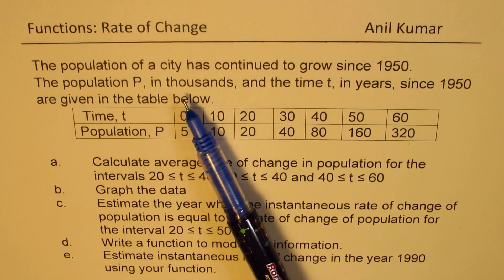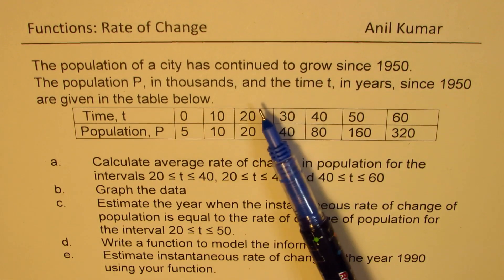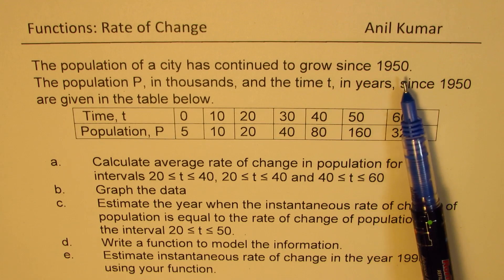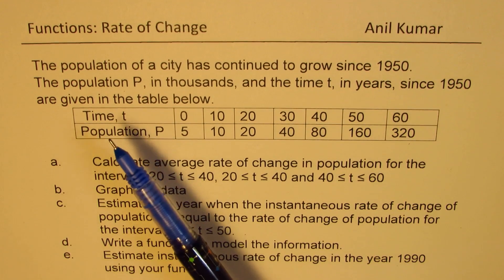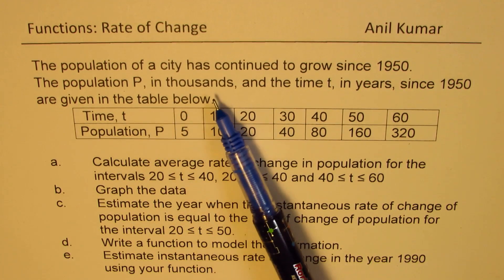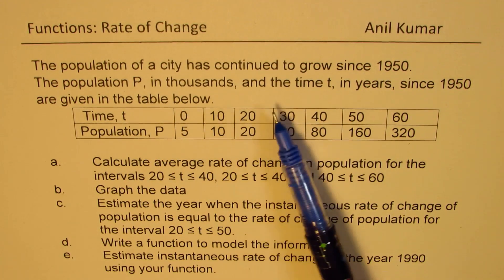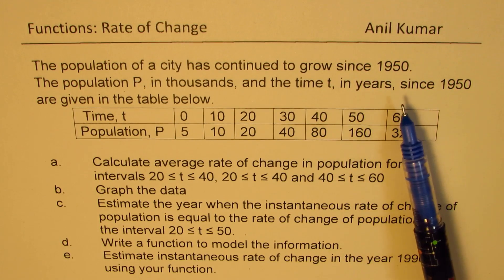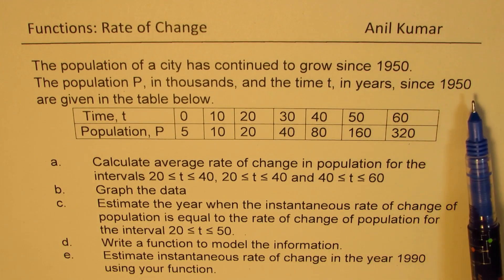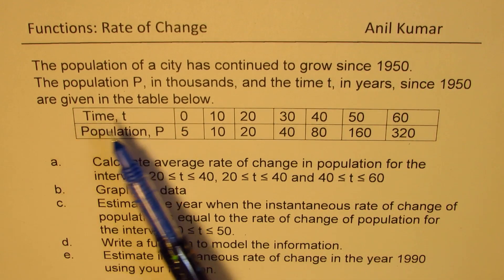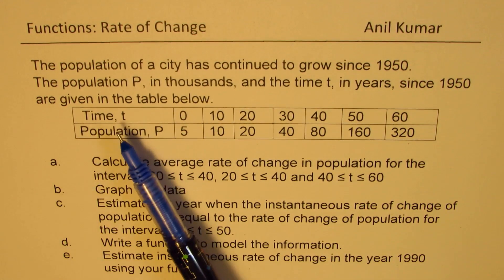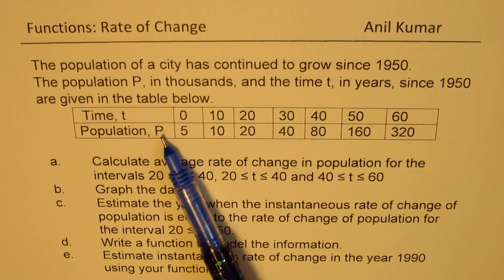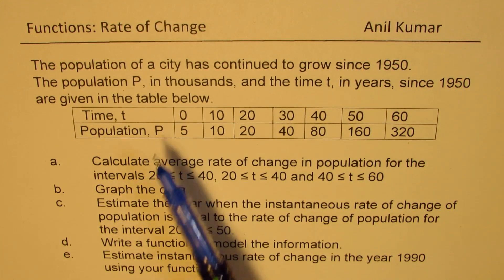The population of a city has continued to grow since 1950. The population P in thousands and the time T in years since 1950 are given in the table below. So time and population — this population is in thousands.